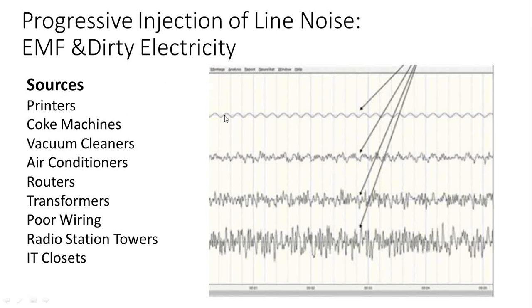Here's a progressive injection of noise and EMF into dirty electricity. There's a nice wave, a 10 hertz sine wave, and we're projecting more and more noise into it. That could be coming from printers around your desk, Coke machines in your hallway plugged into your electrical circuit, vacuum cleaners, air conditioners outside your window, routers in the wall, transformers sitting outside your window, poor wiring if you're in a really old building, radio station towers producing amplitude modulated waves, and IT closets.